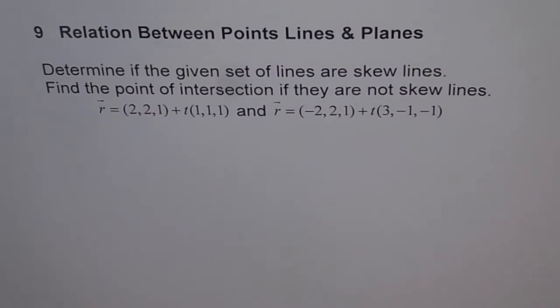R is equal to (2, 2, 1) plus T(1, 1, 1), and R equals to (−2, 2, 1) plus T(3, −1, −1).